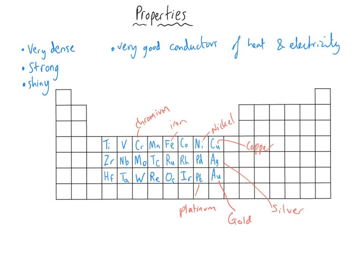None of those will come as surprises: iron is very strong so it's often used in bridges and construction. Copper conducts electricity so it's often used in electrical wiring. It conducts heat so it's often used in saucepans, and iron is used in saucepans too. Platinum, gold and silver are not very quick to corrode so they're used in jewellery.